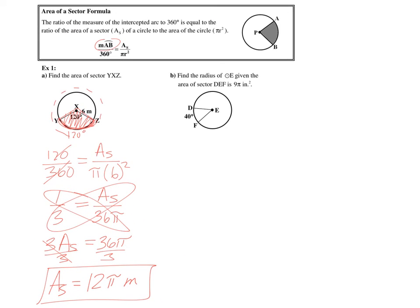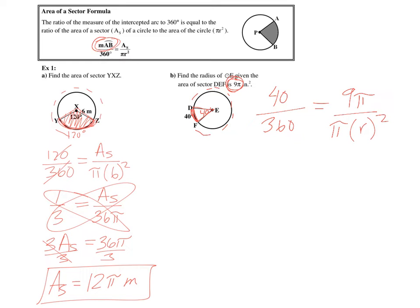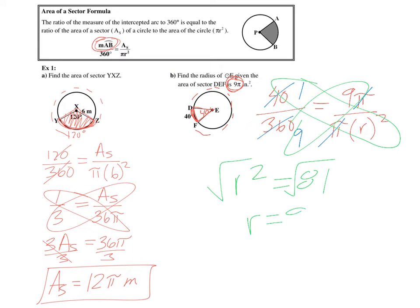Part b: find the radius of circle E given that the area of sector DEF is 9 pi inches squared. The arc measure is 40 degrees, so we set up 40 over 360 equal to 9 pi over pi r squared. The pi's cancel, and simplifying 40 over 360 gives one-ninth. Cross-multiplying: r squared equals 9 times 9, which is 81. Taking the square root, r equals 9.